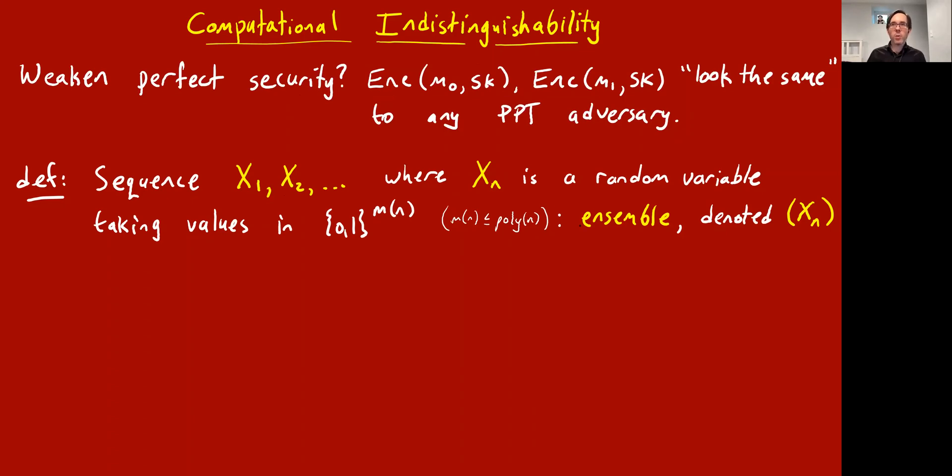And we can weaken perfect security by saying, well, they don't have to be literally exactly the same probability distribution, as long as there are two probability distributions which cannot be really distinguished by a PPT, probabilistic polynomial time, adversary. So let's make some definitions that will help us encapsulate this. The first definition we're making is the definition of an ensemble, which is just some crypto terminology for a simple concept, basically a sequence of binary string-valued random variables.